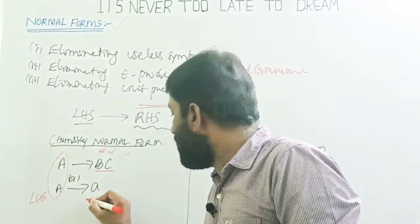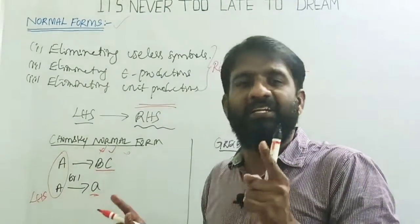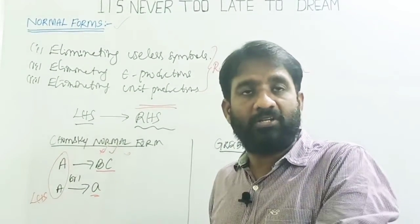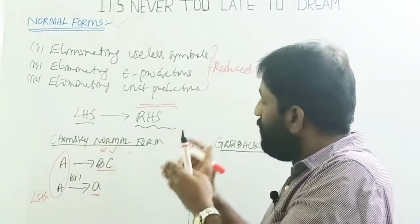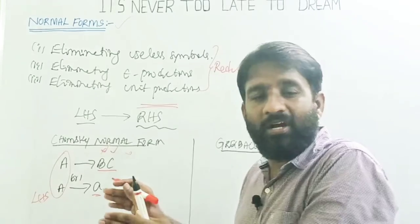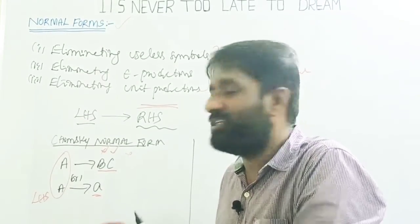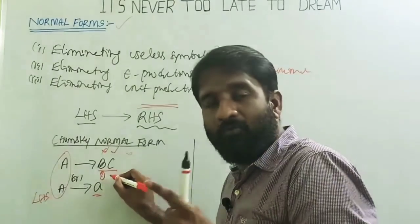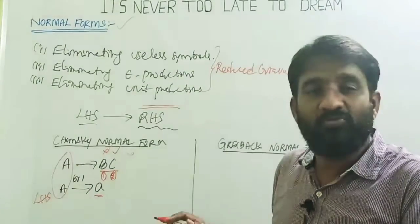In Chomsky Normal Form, the RHS can contain exactly two non-terminals, or exactly a single terminal. Epsilon is not allowed, two terminals are not allowed, and three or more symbols are not allowed. So the maximum length of the RHS in CNF is two symbols.